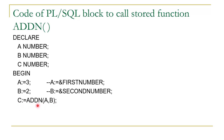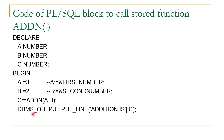After getting the values in A and B, we call the stored function by writing: C := add_n(A, B). We are calling stored function add_n and passing two values A and B. The result is stored in C. The DBMS_OUTPUT.PUT_LINE statement is used to display the value of C. This PL/SQL block is terminated with END. Note that in this PL/SQL block, the function is not defined here, but we are still able to use it because it is now a stored function.